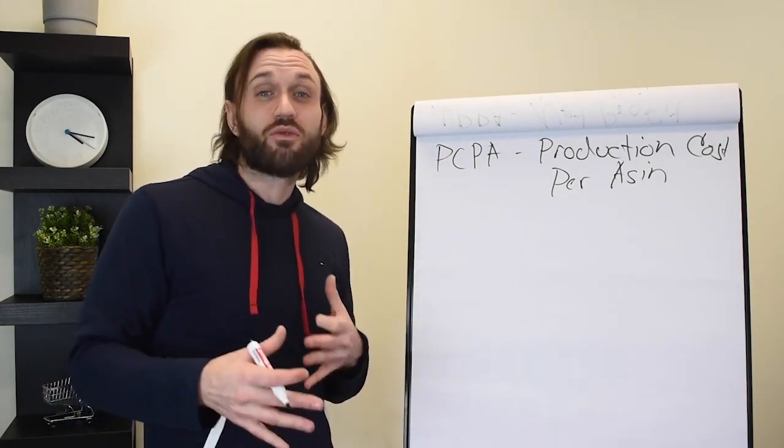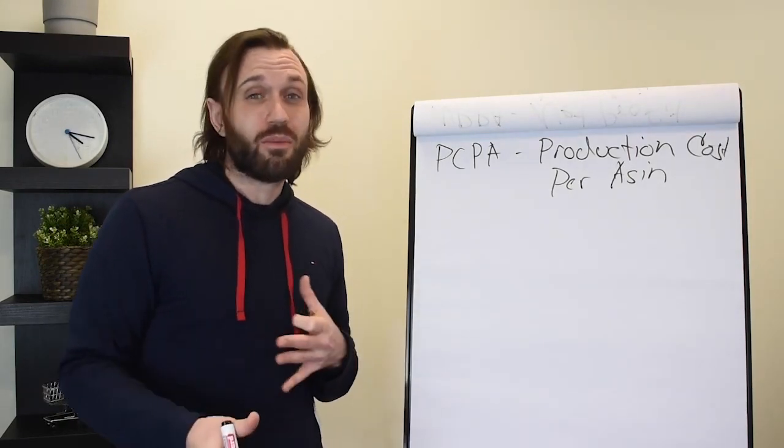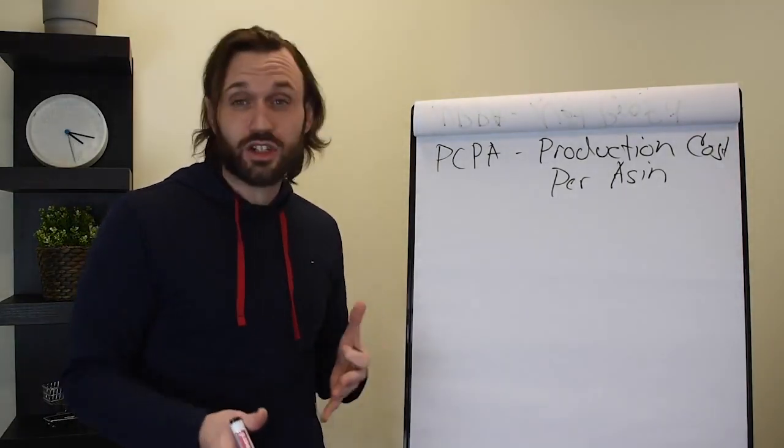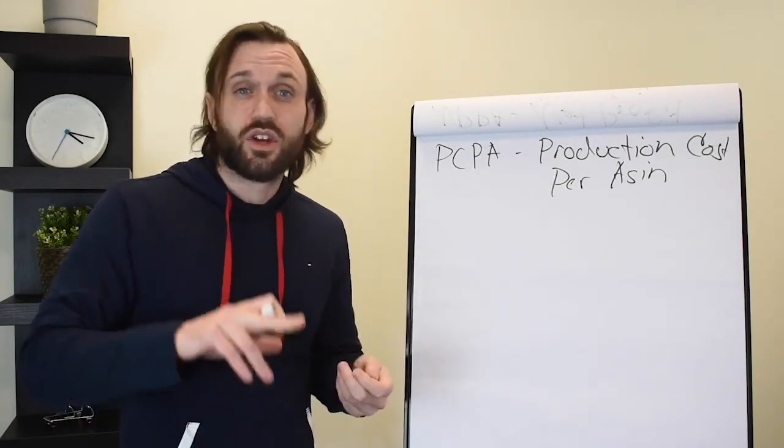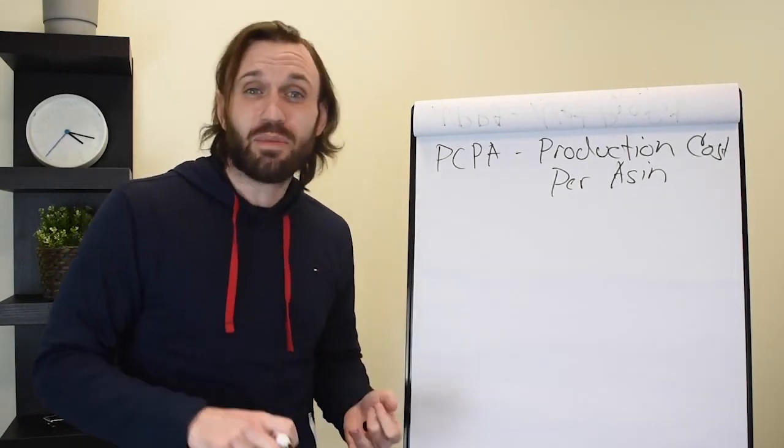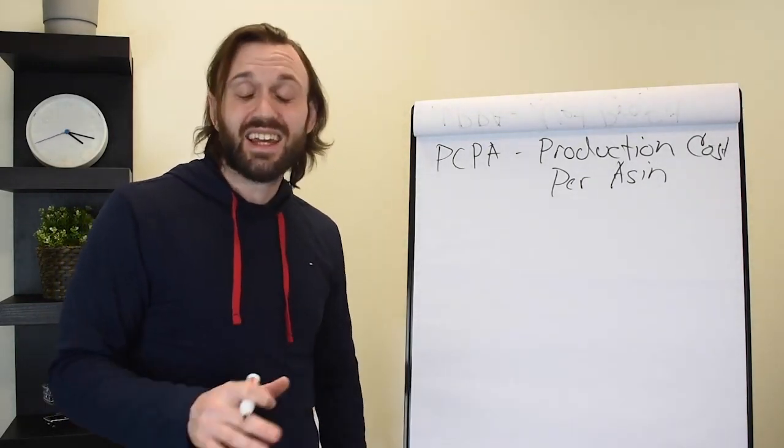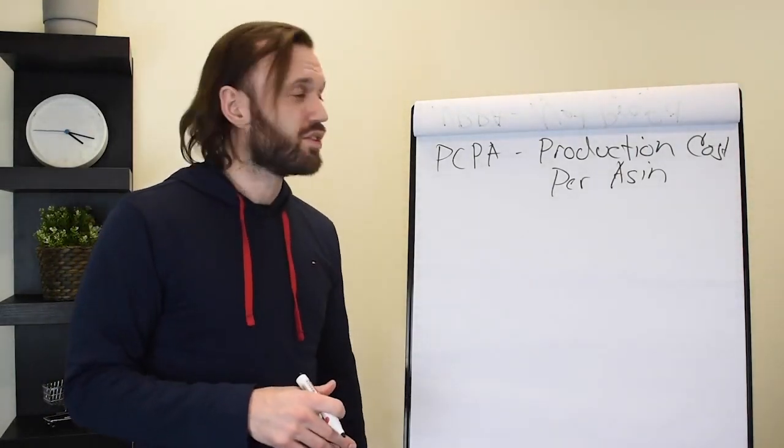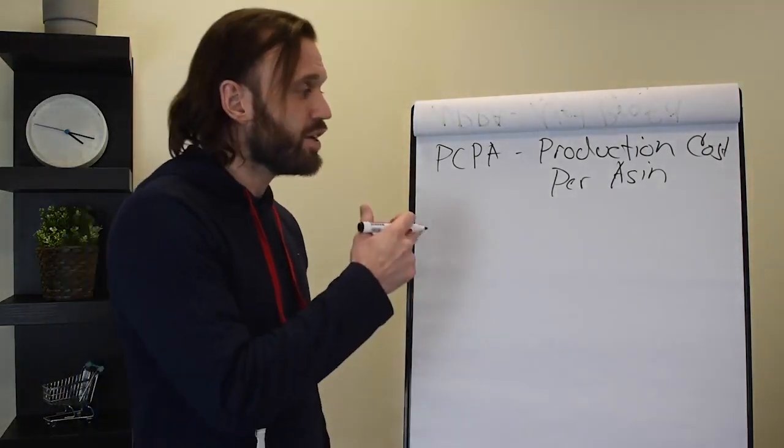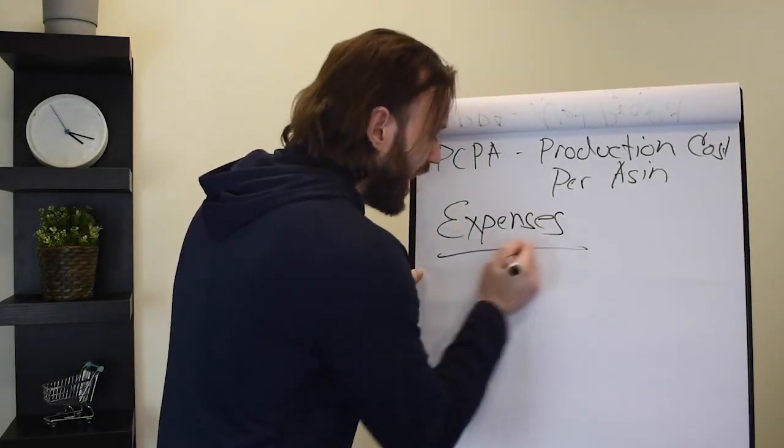You should be analyzing this information and having it readily available in a Google document so you could just pull averages from month to month of what your production cost or expenses are. I'm talking gas, travel, dinners, boxes, tape, labor, rent, pallet jacks—anything that's an expense should be included in the expenses we're about to look at.